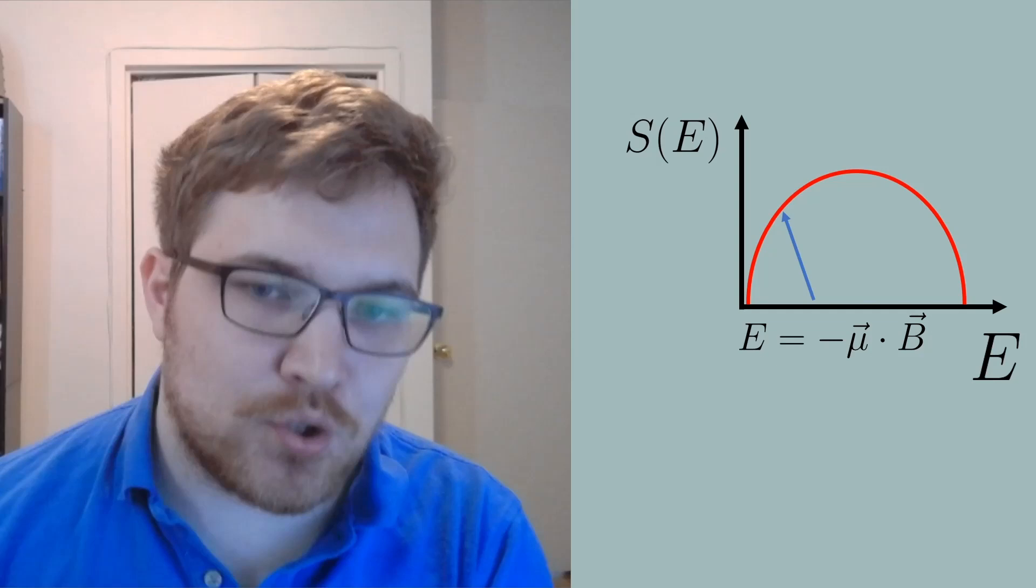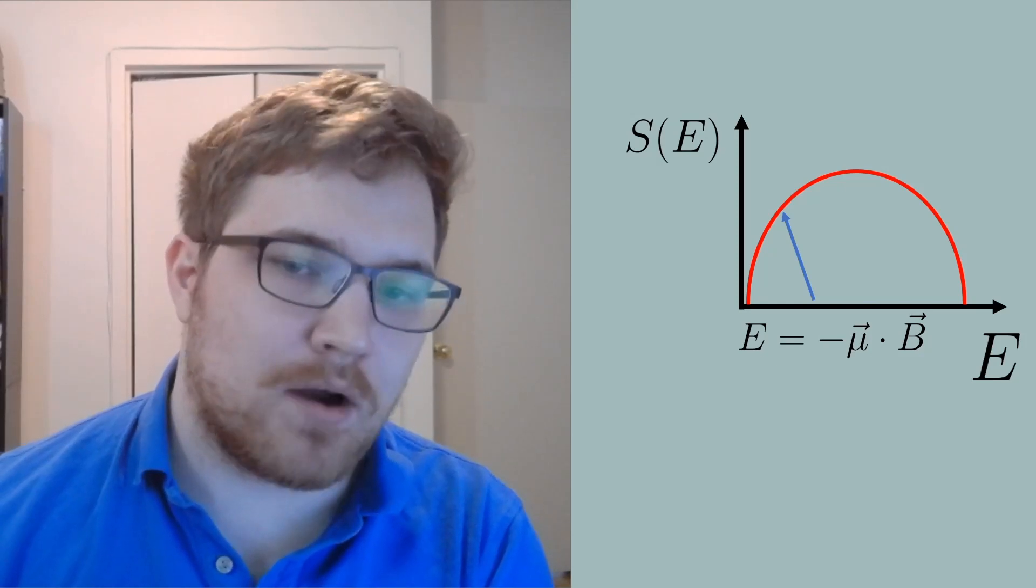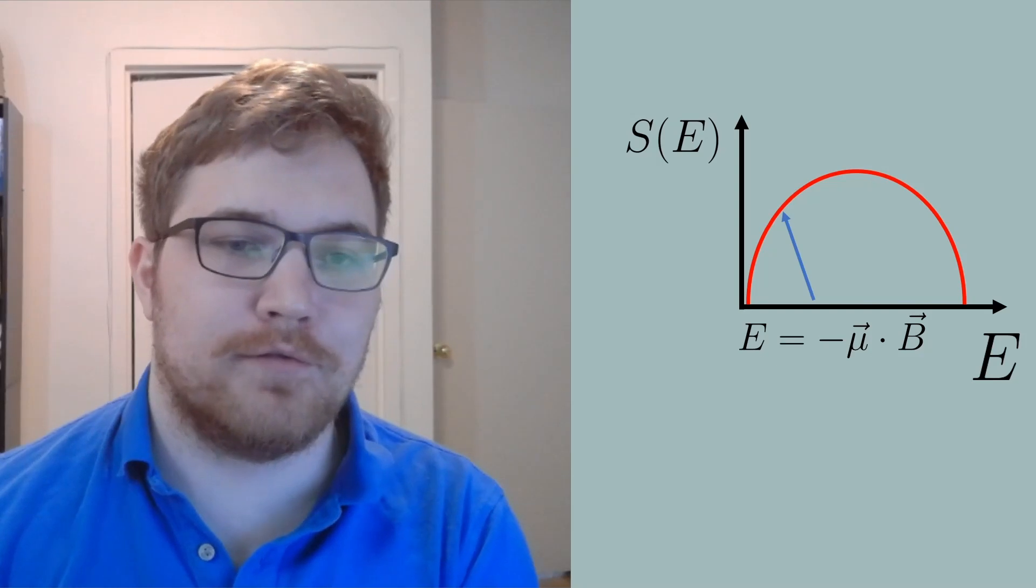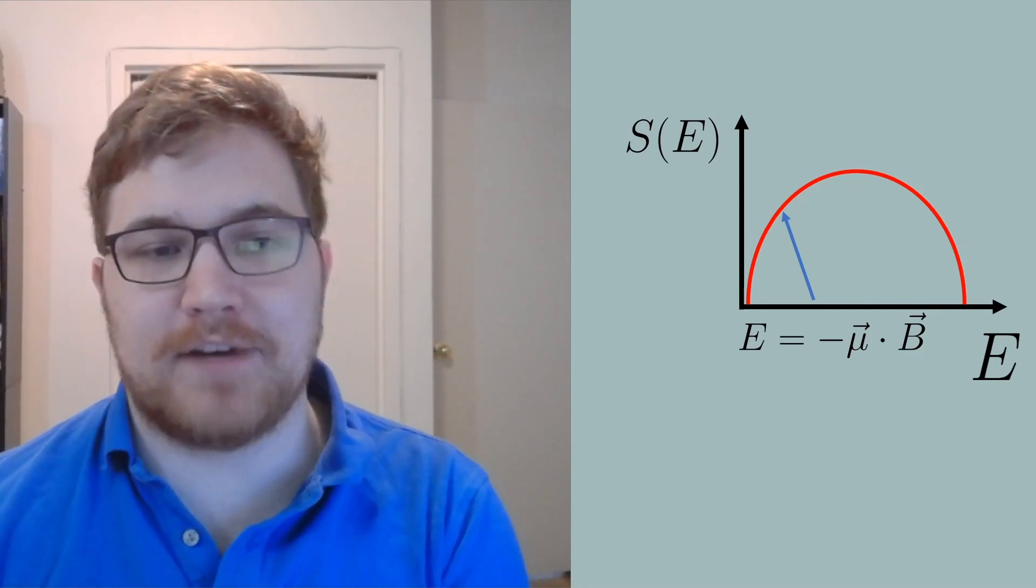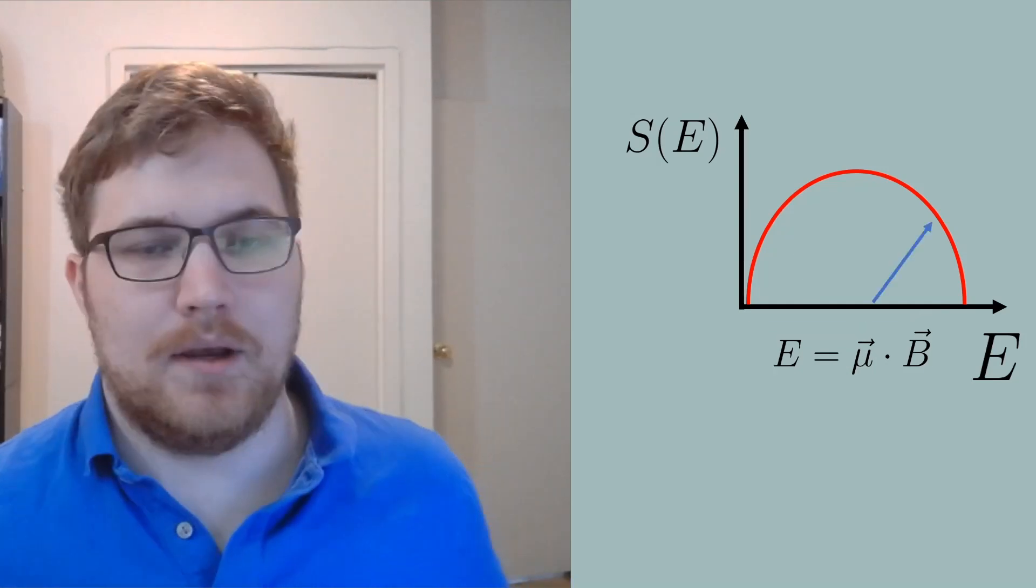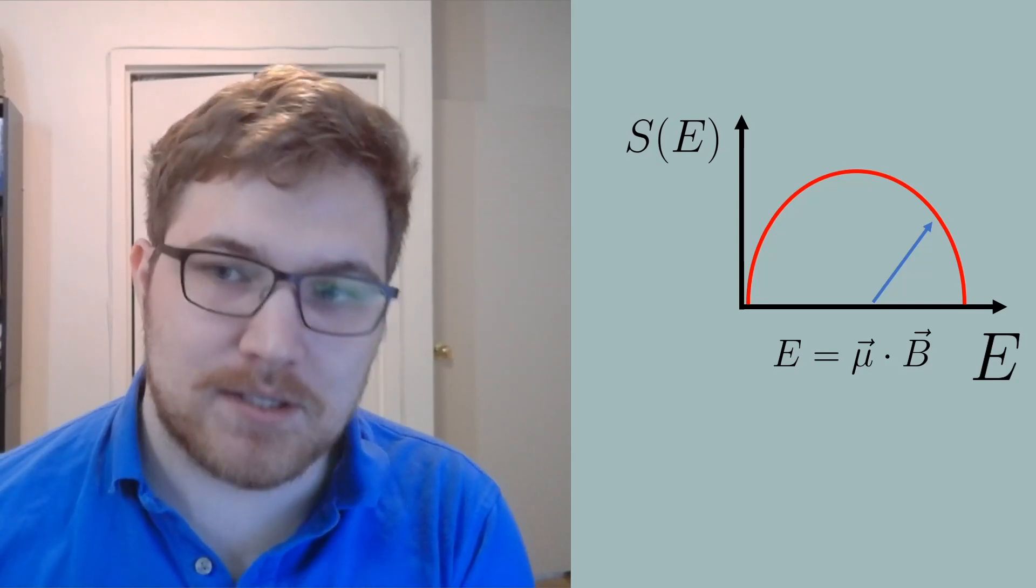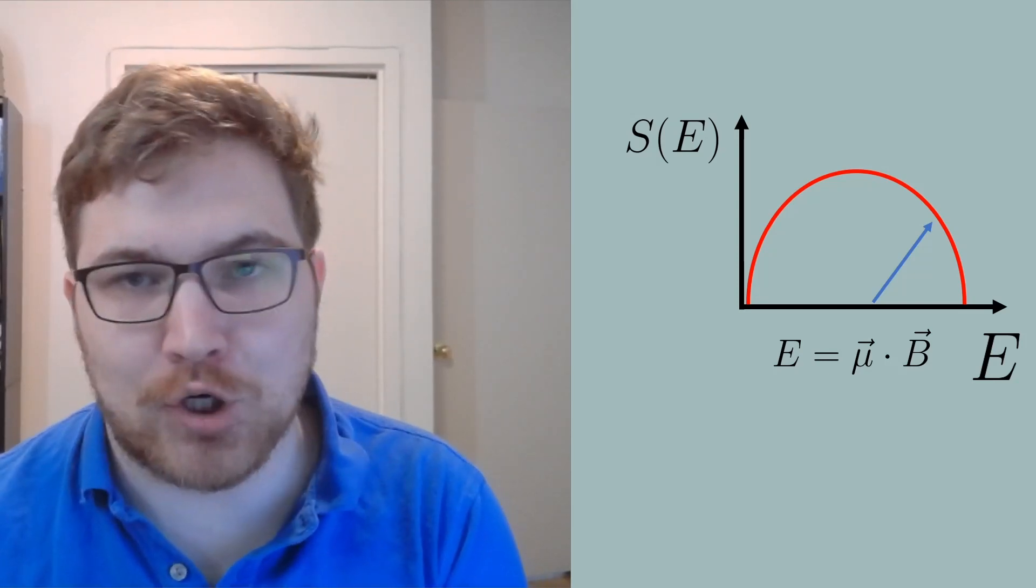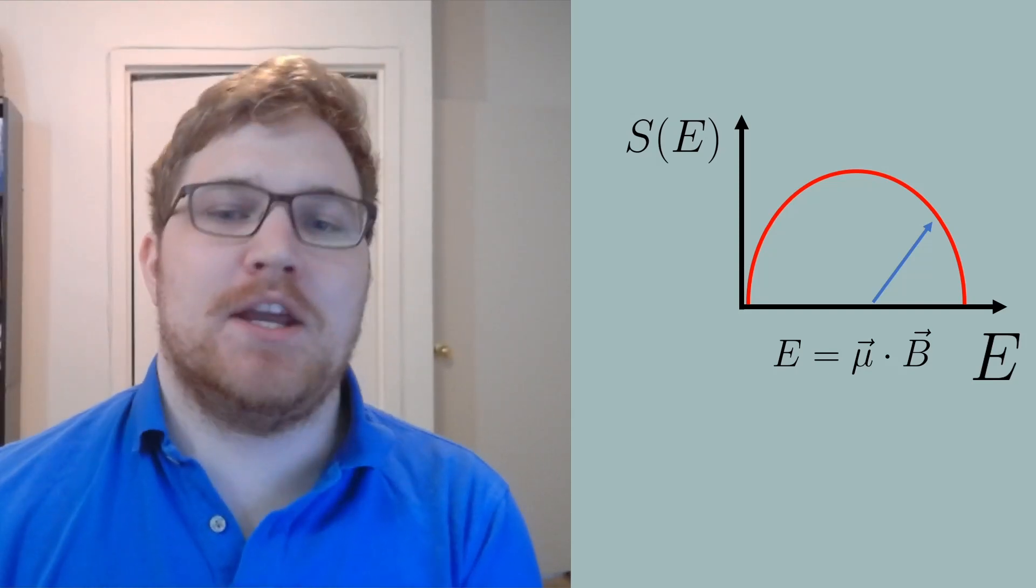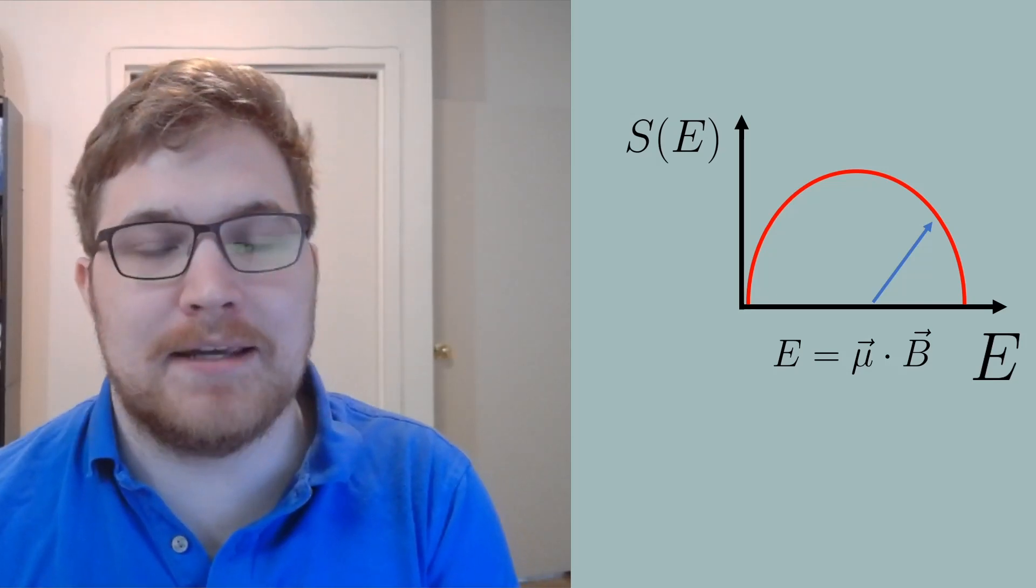We prepared an energy state at low but positive temperature. The blue arrow indicates where our prepared system's energy lies on the entropy versus energy curve. Take note specifically of the fact that our slope is positive indicating a positive temperature. By flipping the magnetic field rapidly but keeping the magnetic moment constant, we end up in a much higher energy regime. This then gives us a negative slope on the entropy versus energy plot, which then corresponds to a negative temperature.